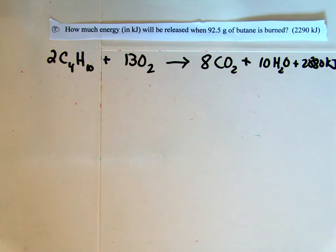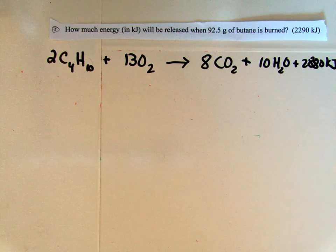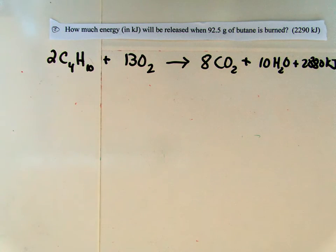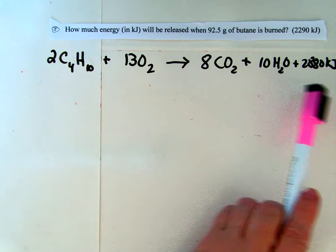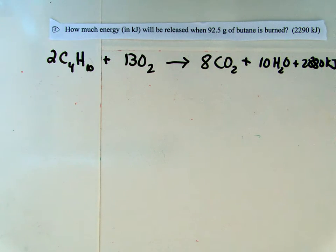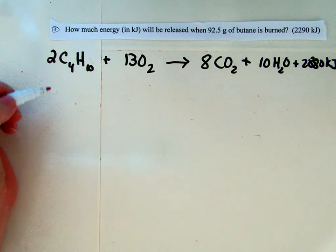Hi everyone. Here's a little bit of a different kind of stoichiometry problem. This one is almost kind of like the last problem we did backwards. So again, we're starting off with the same balanced chemical equation for the combustion of butane. In this problem, I'm asking how much energy in kilojoules will be released when 92.5 grams of butane is burned.